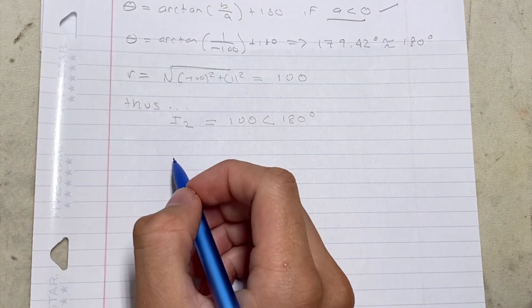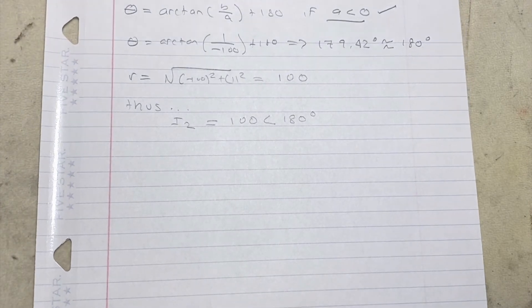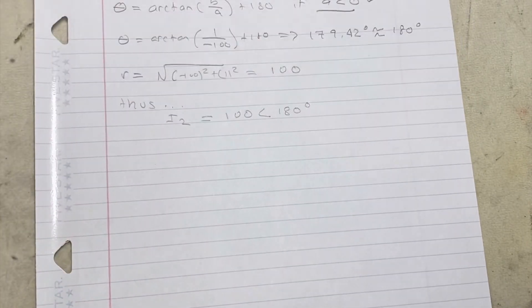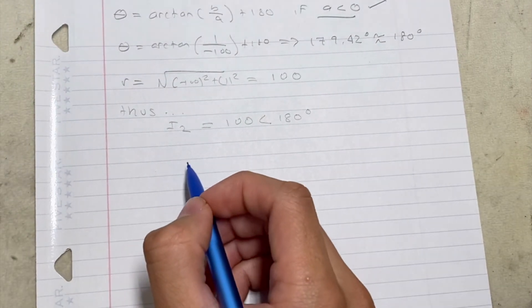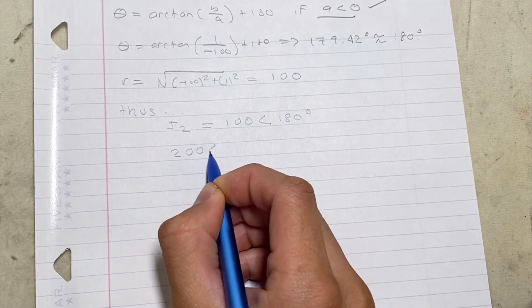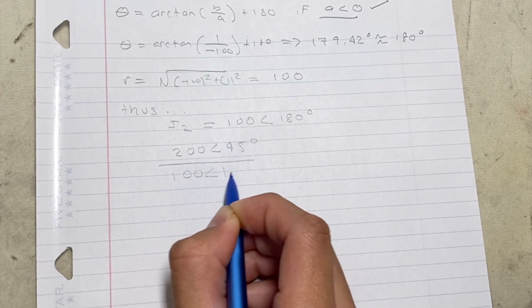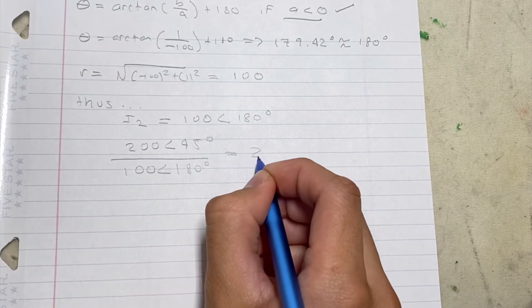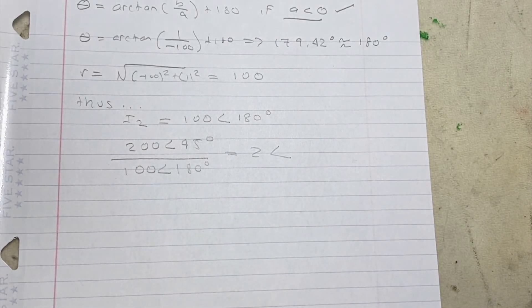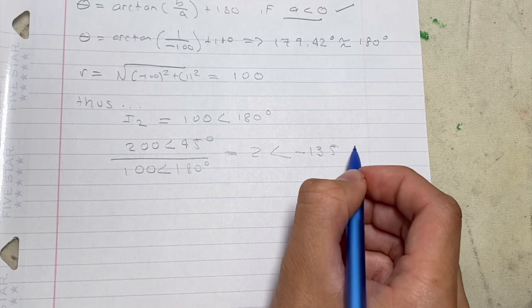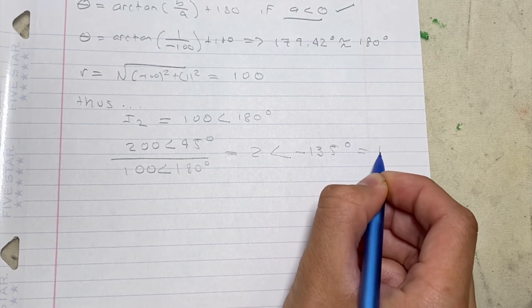Now this 100 angle 180 is replacing the -100 plus J. So if we rewrite it out it'll be 200 angle 45 degrees over 100 angle 180 degrees is equal to 2 angle negative 135 degrees. Now that is going to be I2.